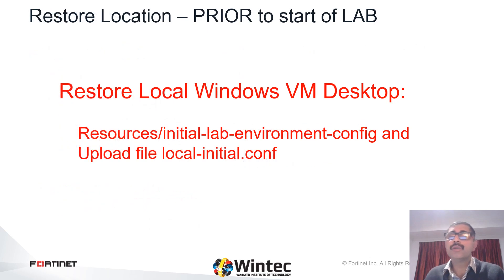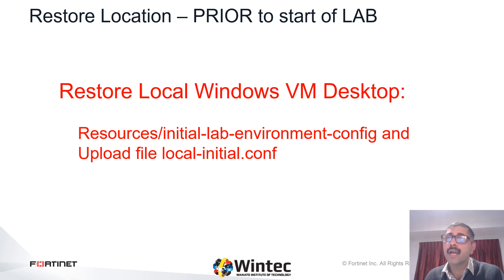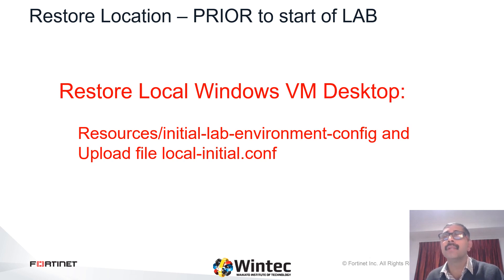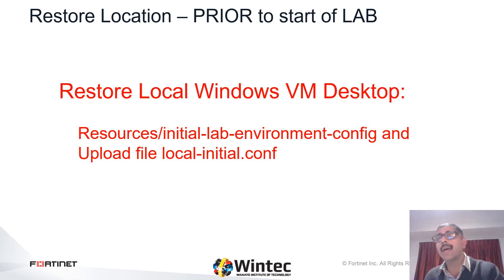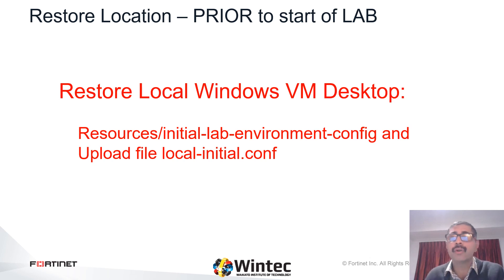For those of you who are using the virtual system, it's essential that prior to starting this lab, you restore the original file to Local FortiGate Firewall from the folder on the Local Windows Virtual Machine Desktop — that is Resources, Initial Lab Environment Configuration — and upload the file LocalInitial.Config. This file will reset all firewall conditions and you will not have a problem in the network. If you configure the details as per instructions while doing the lab, the Local FortiGate config files are located in the Resources, Security, Antivirus folder as mentioned in your lab guide.